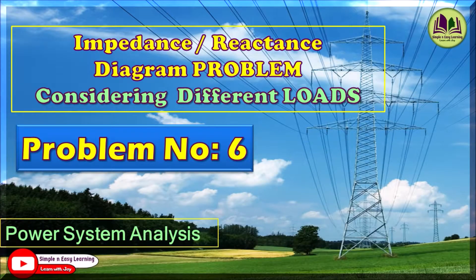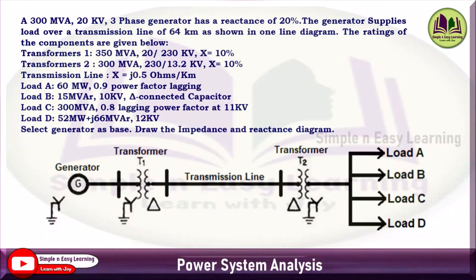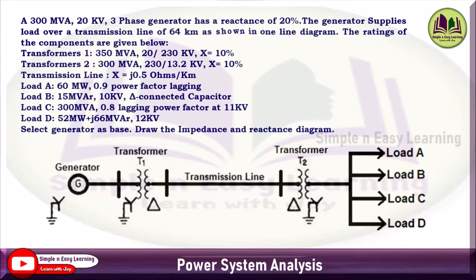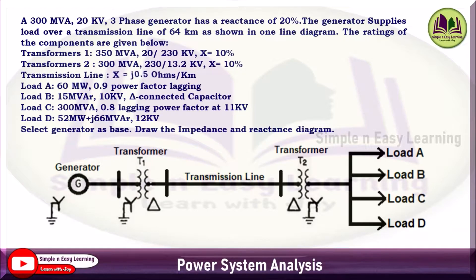Impedance and reactance diagram problem considering different loads — problem number six. A 300 MVA, 20 kV three-phase generator has a reactance of 20%. The generator supplies load over a transmission line of 64 kilometers as shown in the one-line diagram. The ratings of the components are given below.